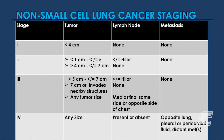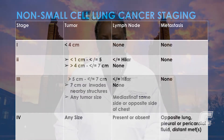Stage 3 involves tumors that have spread to the lymph nodes in the center of the chest, or tumors that are greater than 7 centimeters in size, or tumors that have spread to local structures within the chest. The lung cancer stages are subdivided and the best prognosis is associated with the lowest stages.